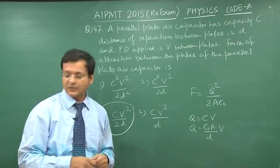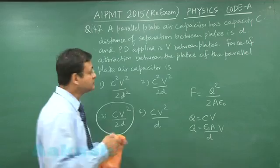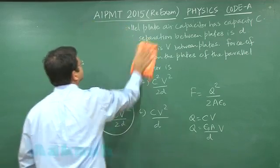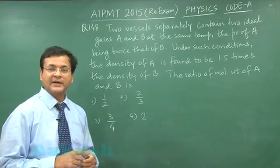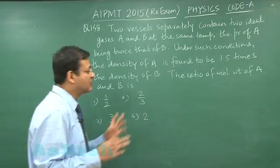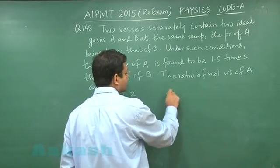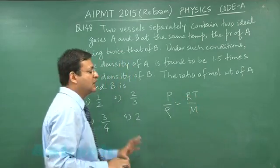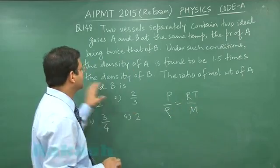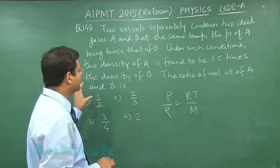Switch over to the next question, 148. This question is based on ideal gas equation, but you will be using this ideal gas equation in the modified form: p by ρ equals RT by M, because they want the ratio of molecular weight. Finally they want the ratio of molecular weight of A and B.